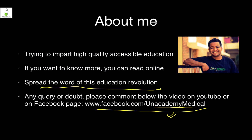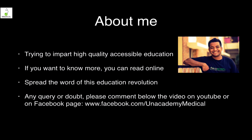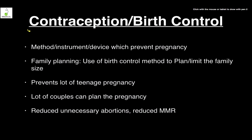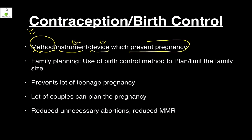Contraception and birth control are almost synonymous — any method, instrument, machine, or device which prevents pregnancy. That's the basic definition: anything which prevents pregnancy is contraception. Family planning is the use of birth control to plan or limit family size, which is a slightly different concept.